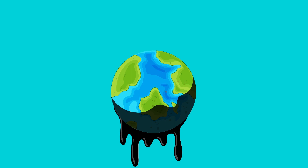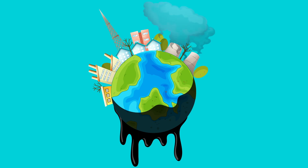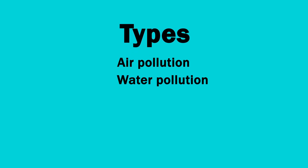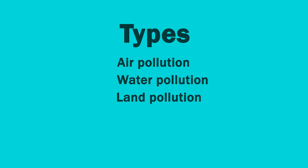Environmental pollution is defined as the contamination of the physical and biological components of the earth/atmosphere system to such an extent that normal environmental processes are adversely affected. Air pollution, water pollution, and land pollution are three major forms of environmental pollution.